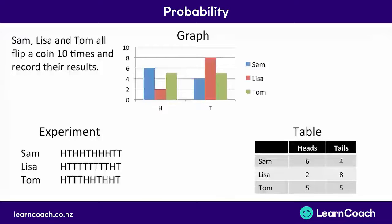Hopefully you can see the same information is recorded but it's all displayed differently. Now I'm sure you're aware that if you were going to flip a coin ten times, you would expect to see five heads and five tails on average. In reality it might be a little different, and Sam and Lisa have both found different results.